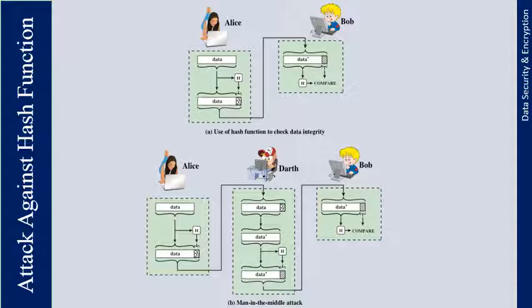This type of attack is shown in the figure as a man-in-the-middle attack. In this example, user Alice transmits a data block and attaches a hash value with it. The attacker intercepts the message, alters or replaces the data block, calculates and attaches a new hash value, then sends it to user Bob. Bob receives the altered data with the new hash value and does not detect the change. To prevent this attack, the hash value generated by Alice must be protected.